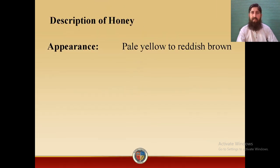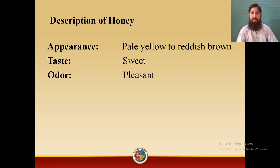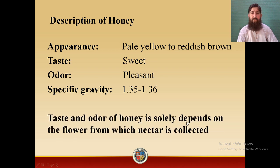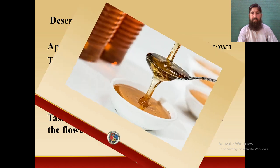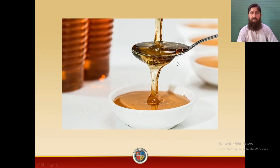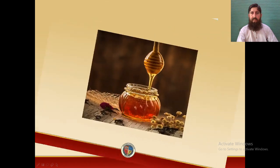Description of honey — its appearance, taste, and odour. Honey is pale yellow to reddish brown in appearance. Its taste is sweet and odour is pleasant. The specific gravity of honey is 1.35 to 1.36. The taste and colour of honey solely depend on the flower from which the nectar is collected, so taste may vary region to region.